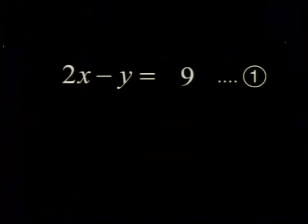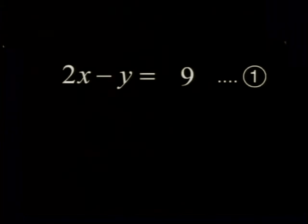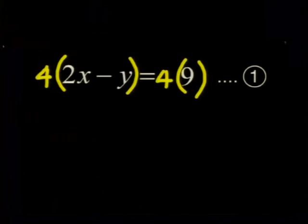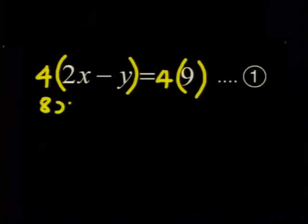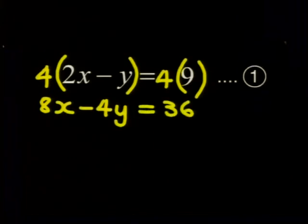Remember that it is perfectly fine to do so as long as we multiply every term on both sides of the equation. Multiplying out gets us 8x minus 4y is equal to 36. We'll call this equation 3.